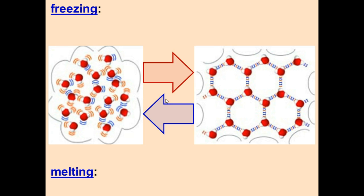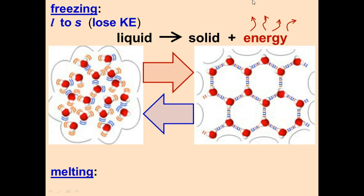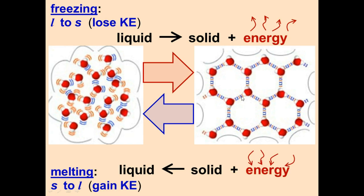Freezing: a liquid loses energy and becomes a solid — energy is given off, atoms move slower and stay more still. This is exothermic because energy is being released. Melting is the exact opposite: a solid gains energy, which is represented by arrows coming in, and turns into a liquid. This is an endothermic process because heat is coming in.